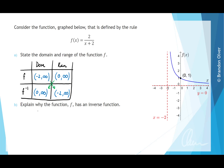For part b, we want to explain why the function f has an inverse function. f is a one-to-one function, which means when we swap x and y it is still one-to-one, meaning that it has an inverse function. So that is our explanation.